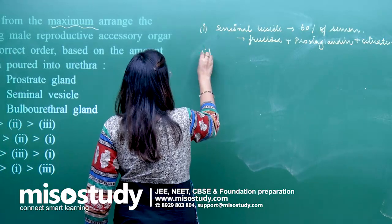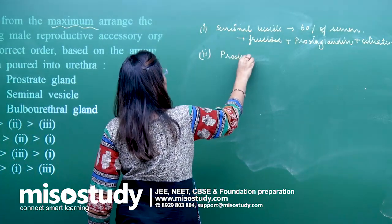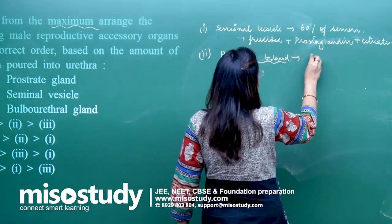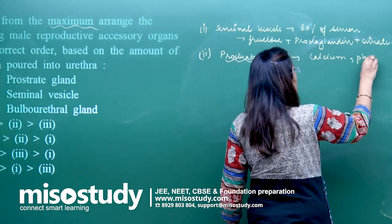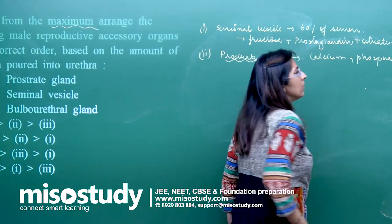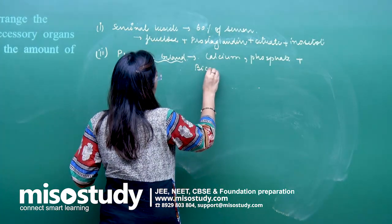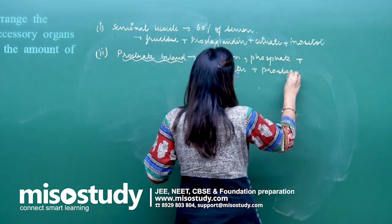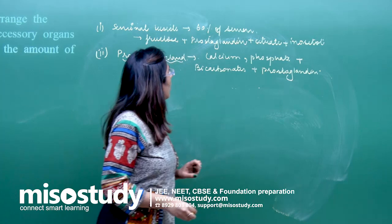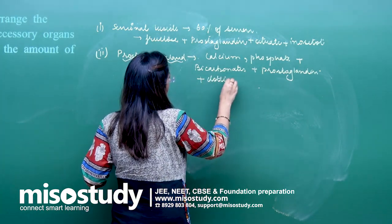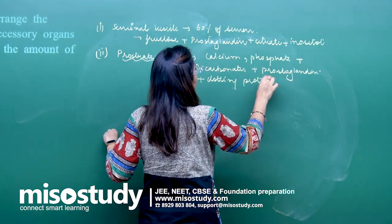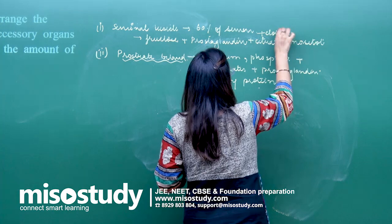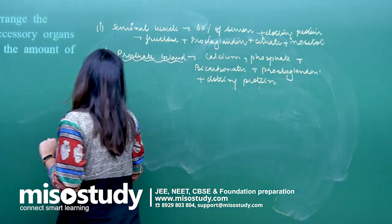On the second number there is the prostate gland — around 30 to 40% of the secretion comes from the prostate gland. Its secretion includes calcium, phosphates, bicarbonates, prostaglandins, and clotting proteins. It provides an alkaline nature to semen, and clotting proteins are also present.